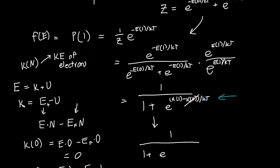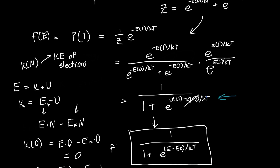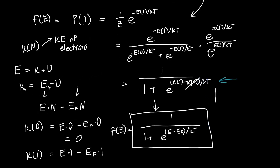So we can rewrite our Fermi function in its final form: 1 over 1 plus e to the E minus EF over kT. And we're done — that is the Fermi function as a function of energy. I hope you enjoyed this video; if you did, please like and subscribe. If you have any comments, feel free to post them below, and I'll see you next time.